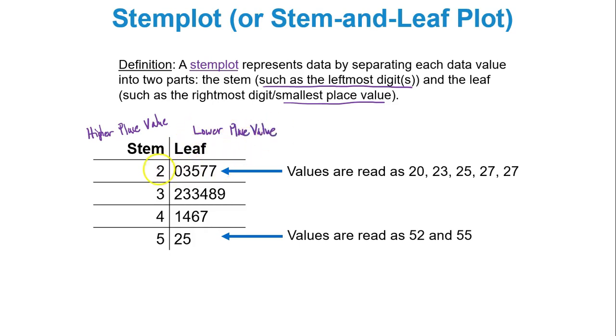In this case I have a stem of 2 and a leaf of 0, this means 20. A stem of 2, a leaf of 3, this is read as 23. And so forth. You have a 5 as a stem and a 2 as a leaf, this is 52. You have a 5 as a stem and 5 as a leaf, this is 55. Oftentimes you'll see a key at the bottom of your stem and leaf plots. You'll see 5 line 2 or something like that, and that means 52. That'll tell you how to read the stem and leaf plot. Sometimes you see a key that tells you that the 5 represents a tens place and the 2 represents a ones place.